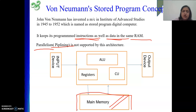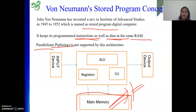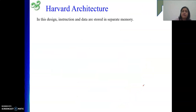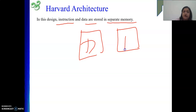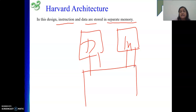The von Neumann stored program concept is: the program is in memory, we fetch it, decode it, and execute it — this cycle continues for the whole program. Harvard architecture is different. The key difference is that in Harvard architecture, instruction and data are stored in separate memory, and there are separate buses for instruction and data. Due to that, simultaneously we can do data transfer as well as instruction fetch, making parallel operations possible.